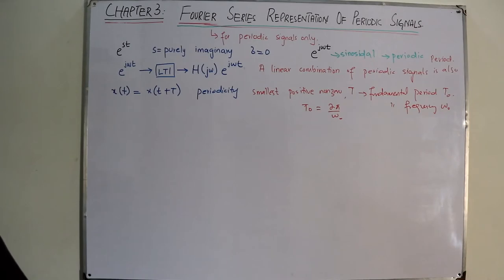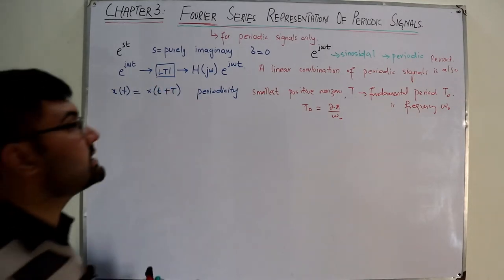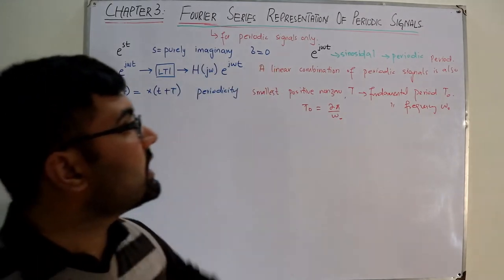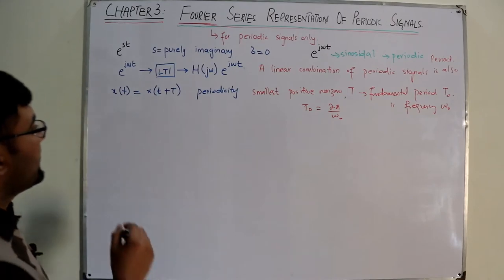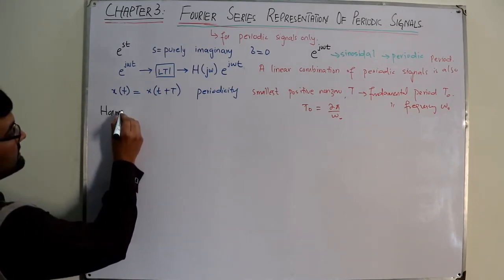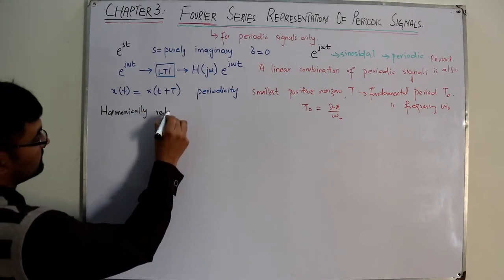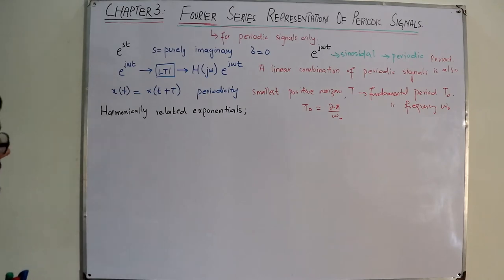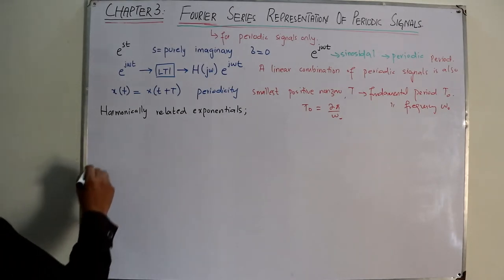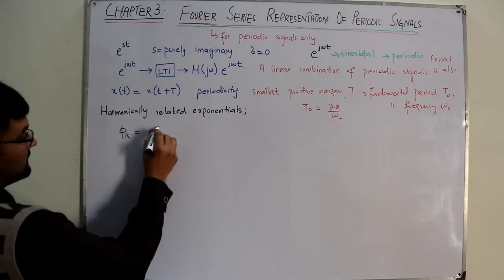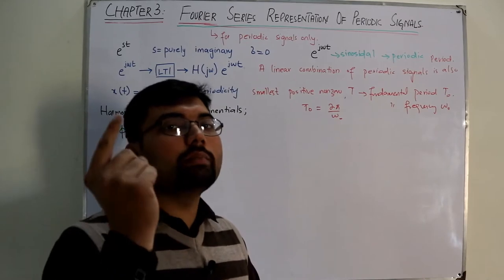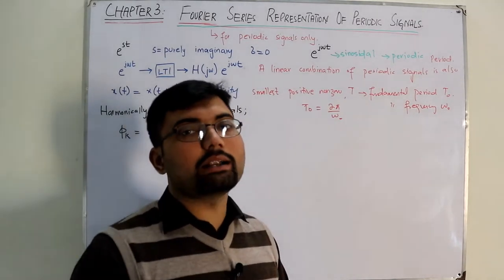Our goal is to represent a given signal as a linear combination of exponential signals. Associated with complex exponentials is the concept of harmonically related exponentials. These are a set of signals represented as φ_k = e^(jkω₀t) — a set of periodic signals having different fundamental periods but one period in common.